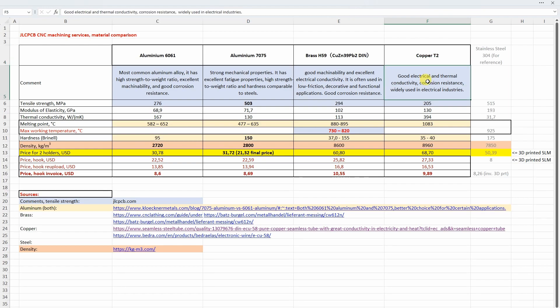Copper, good electrical and thermal conductivity, great corrosion resistance and it is widely used in electrical industries. Now let's see the density. The density of the aluminum is almost one third of these three materials compared to the brass, copper and even the stainless steel.